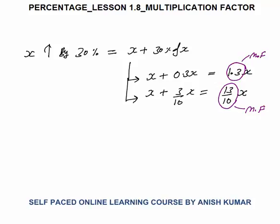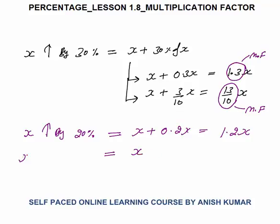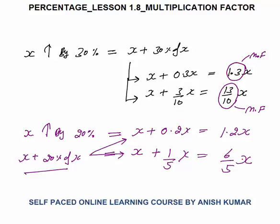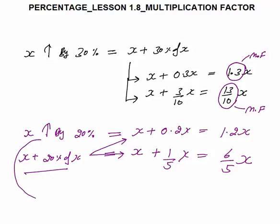You also need to understand the reverse: whenever x becomes 1.3x, it means the number has increased by 30%. Now if x is increased by 20%, this becomes x plus 20% of x, that is x plus 0.2x, which equals 1.2x. Or in fraction form, x plus 1/5 x equals 6/5 x. When solving data interpretation questions, you must straight away know that x increased by 20% means the answer is 6/5 or 1.2x.